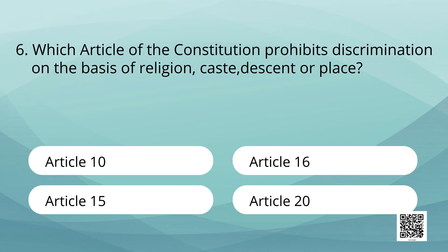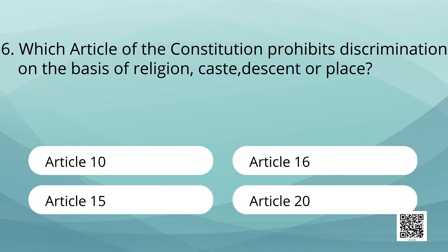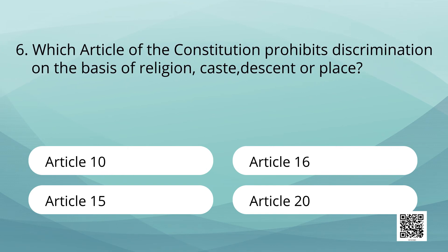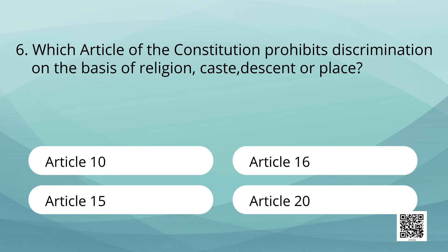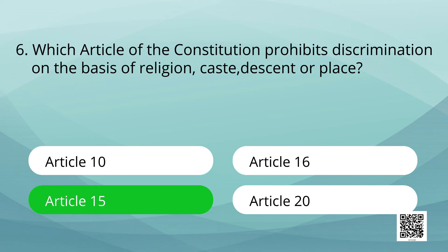Which article of the constitution prohibits discrimination on the basis of religion, caste, descent, or place of birth? Options: Article 10, Article 16, Article 15, Article 20. Answer is Article 15.